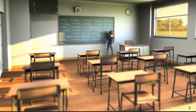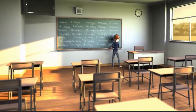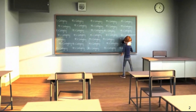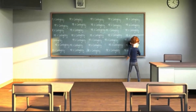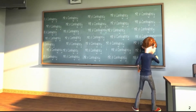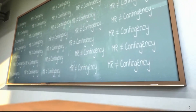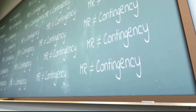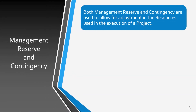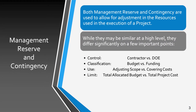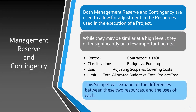The difference between management reserve and DOE held contingency can be confusing. They are not the same, nor do they equal each other. This snippet will explain their similarities and their distinctly different purposes. Management Reserve, or MR, and contingency are both used on DOE contracts to adjust the resources used in the execution of a project. However, they have some significant differences.